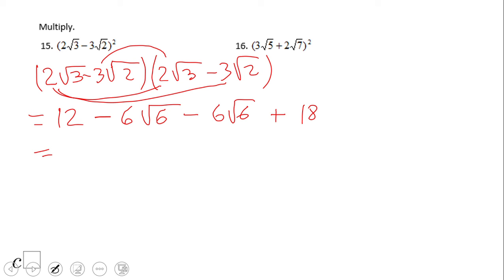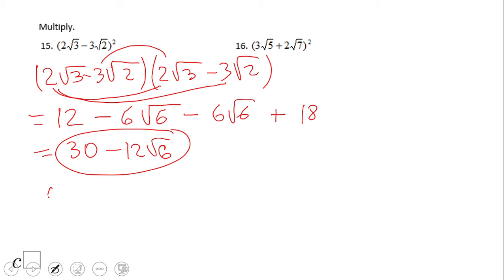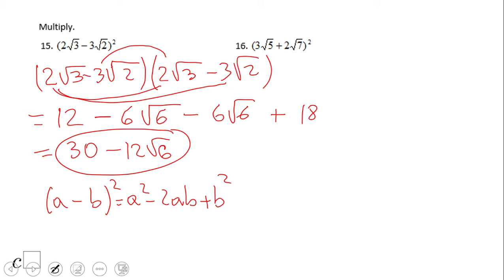The final answer is twelve plus eighteen, which is thirty, minus twelve square root of six. You can also use the shortcut formula (a − b)² = a² − 2ab + b². Pause the video and try number 16 using that method.